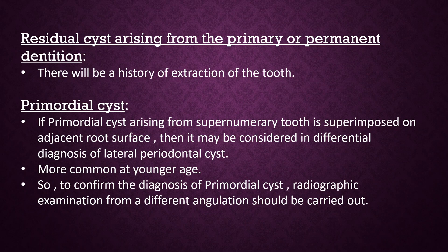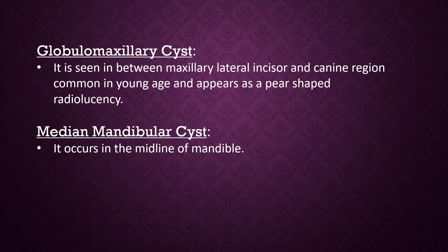To confirm the diagnosis of a primordial cyst, radiographic examination from a different angulation should be carried out, as it is more common at a younger age. Globulomaxillary cyst is seen between the maxillary lateral incisor and canine region, is common in young age, and appears as a pear-shaped radiolucency. Median mandibular cyst occurs in the midline of the mandible.